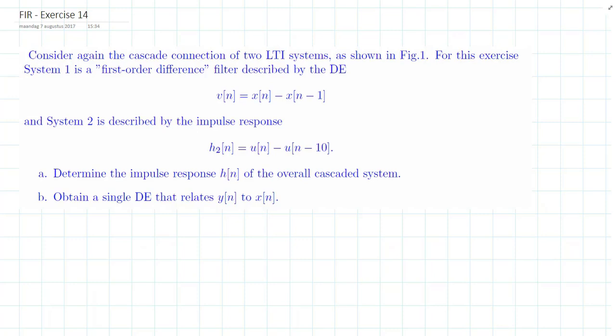system 1 is the first order difference filter described by the difference equation v is equal to x minus x n minus 1 and system 2 is described as an impulse response h of n which is equal to the unit step function n minus the unit step function shifted 10 in time. Determine the impulse response h of n of the overall cascaded system.